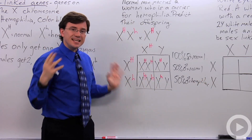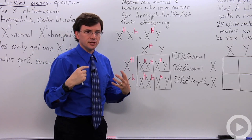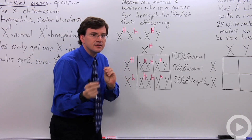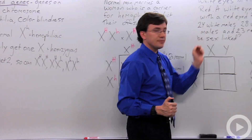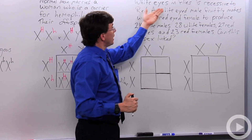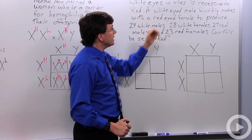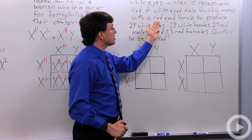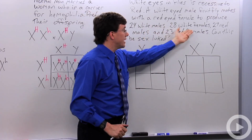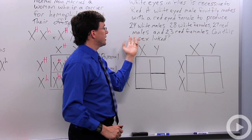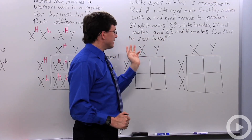That's the easy way to do it. Some biology teachers like to sneak in stealthy sex-linked examples. Here's one: in fruit flies, white eyes are recessive to red. A white-eyed male fruit fly mates with a red-eyed female to produce 24 white males, 28 white females, 27 red males, and 23 red females. Can this be sex-linked?